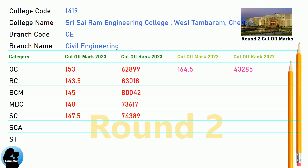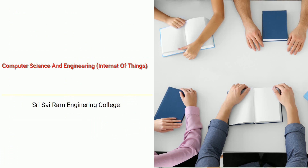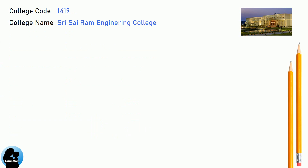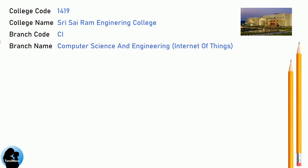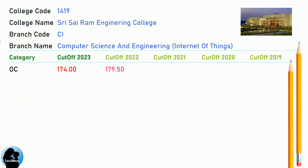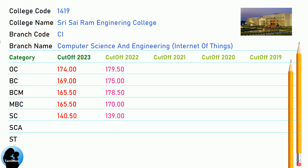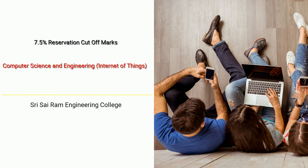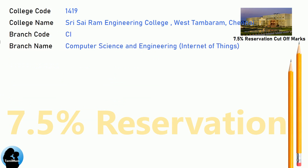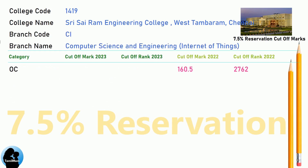DNA Cut-off for Shri Sairam Engineering College in Computer Science and Engineering, Internet of Things. DNA 7.5 Reservation Cut-off for Shri Sairam Engineering College in Computer Science and Engineering, Internet of Things.